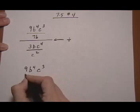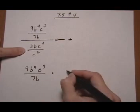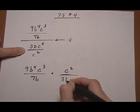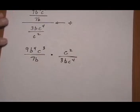So we're going to turn it into the top, multiply by the reciprocal of the bottom. 9b to the 4th c cubed over 7b, multiply by, flip the second one or the bottom one, c squared over 3b c to the 4th.